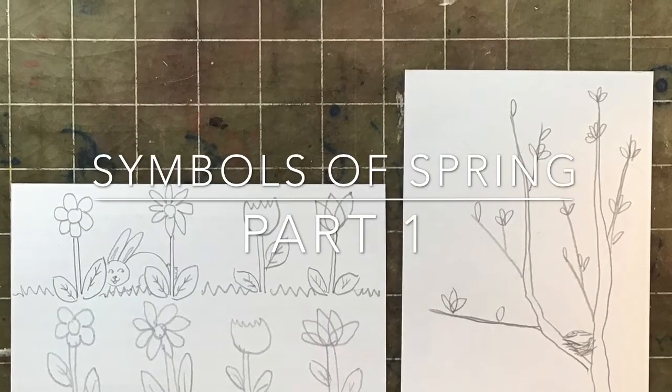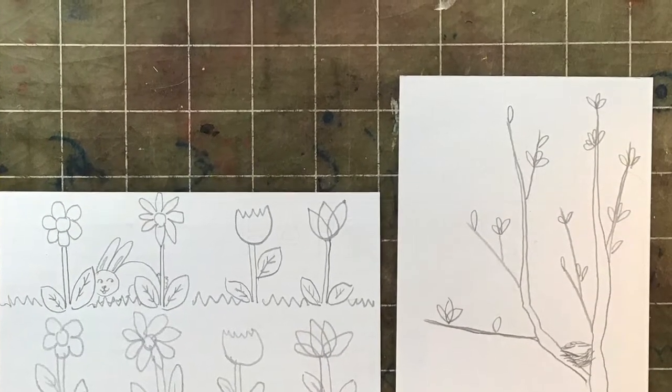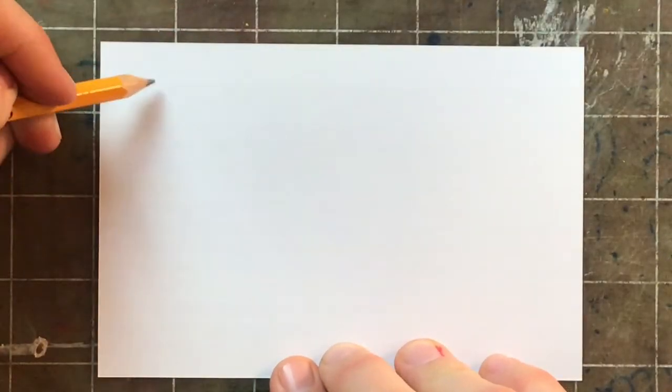Hello and welcome to Symbols of Spring, Part 1. We're going to be drawing types of flowers and two types of animals today.